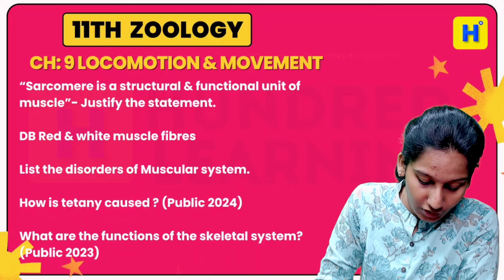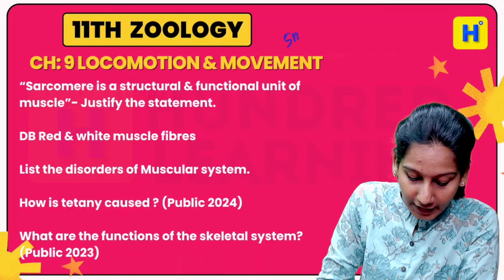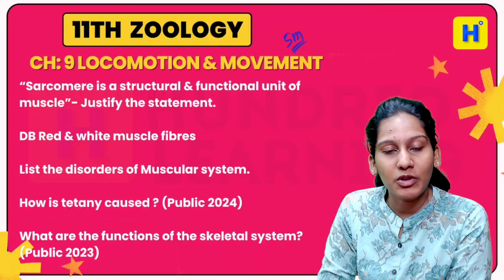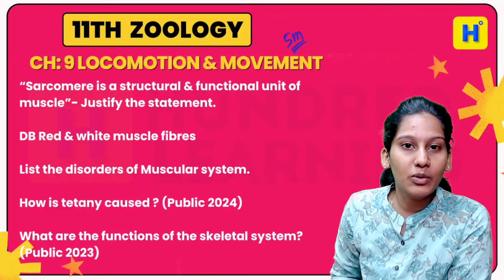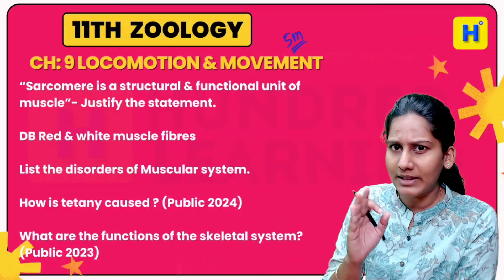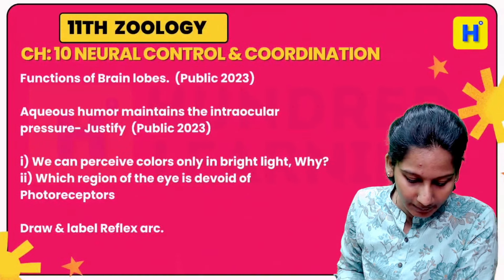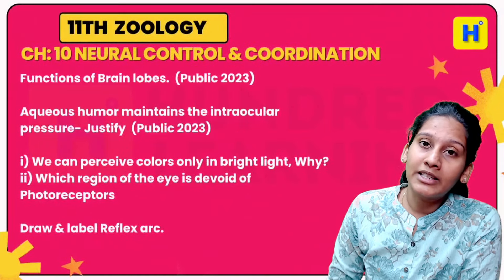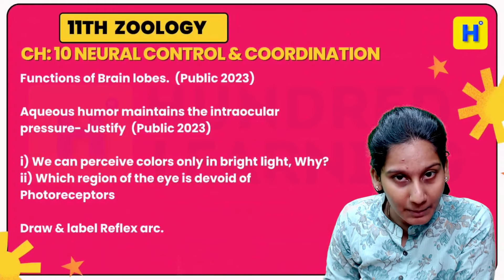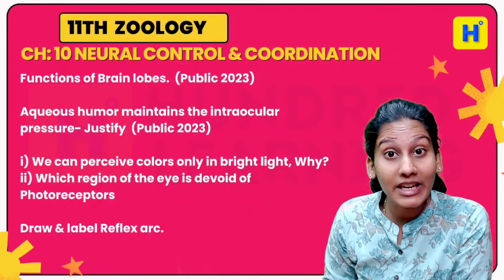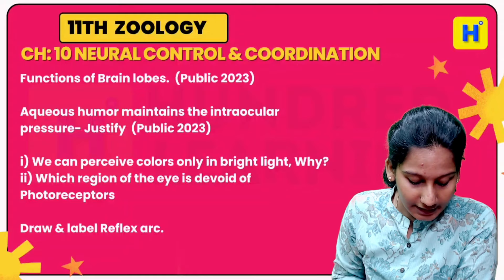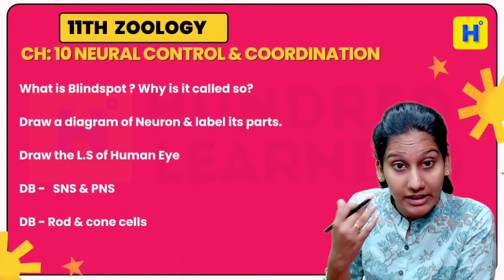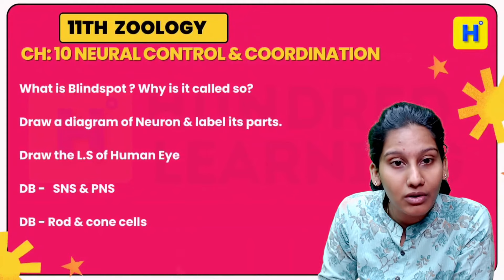We will send the film to the public — it is called Sliding Filament Theory, which is a book-back question, but we will focus on it. We can also talk about the muscle part. For Neural Control and Coordination, we can talk about the functions of brain lobes, book-inside questions, diagrams, and neurons.